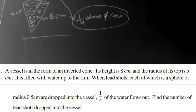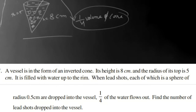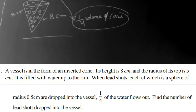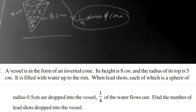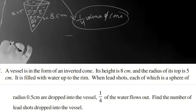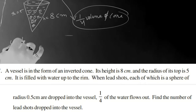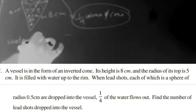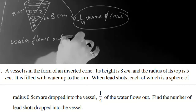The question asks how many lead shots we dropped into the vessel. First, find one-fourth the volume of the cone — that is how much water flowed out. Next, find the volume of each lead sphere. Then divide the two values to get the number of lead shots required.